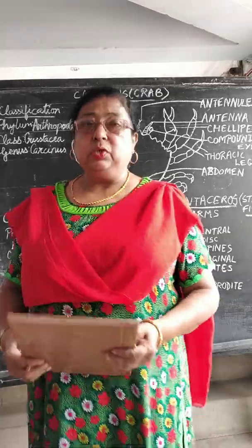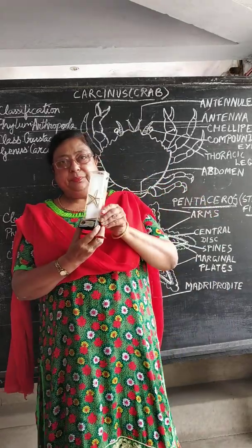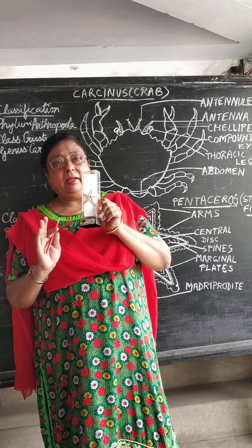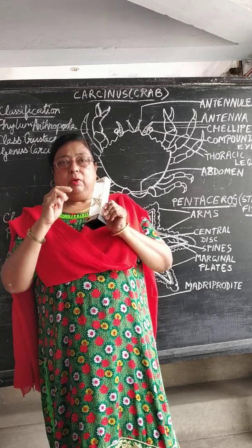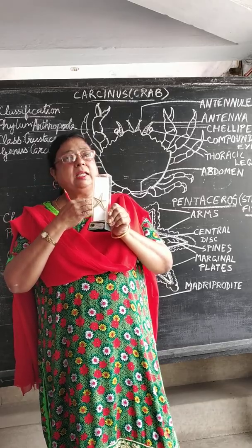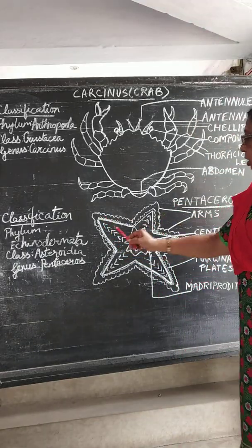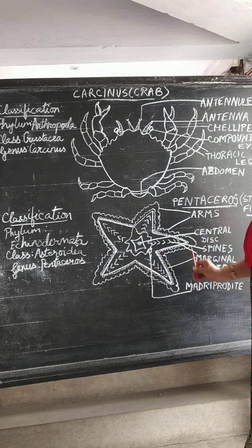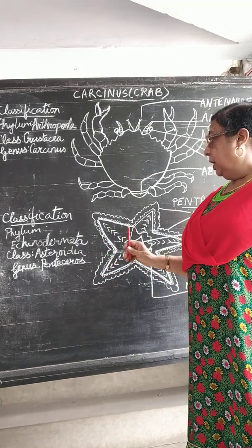Now I will do the next museum specimen — the starfish. As it looks like a star, it is very symmetrical with five arms. The body has got an oral surface and an aboral surface. The oral surface is concave with the mouth in the center, and the aboral surface is at the back. Here is the diagram of the starfish. The labeling includes the central disc, the spines, the marginal plates, and the madreporites or ossicles through which water comes in and goes out.